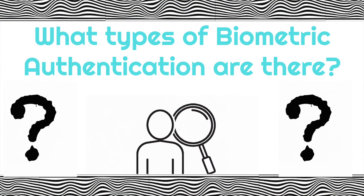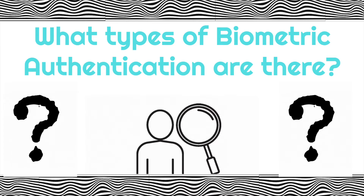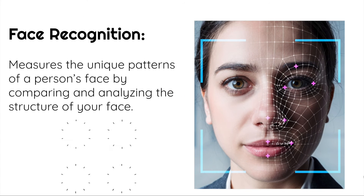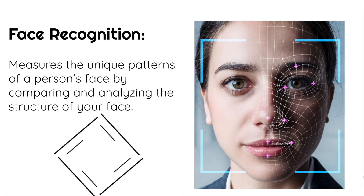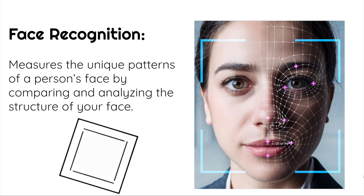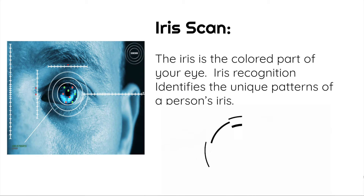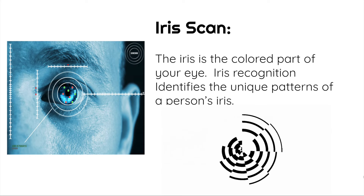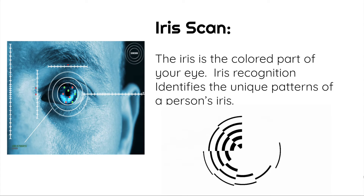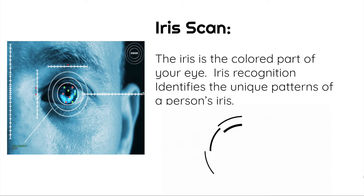Let's take a look at a few common types of biometric authentication. The first one is face recognition. Face recognition measures the unique patterns in your face that are exclusive to you. Computers analyze your face and compare it to the data they've collected on the structure of your face. The next type is the iris scan — the iris is the color part of your eye, and iris recognition identifies the unique patterns in your own iris to confirm your identity.